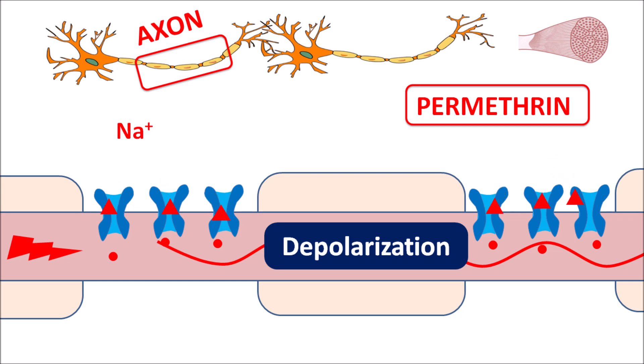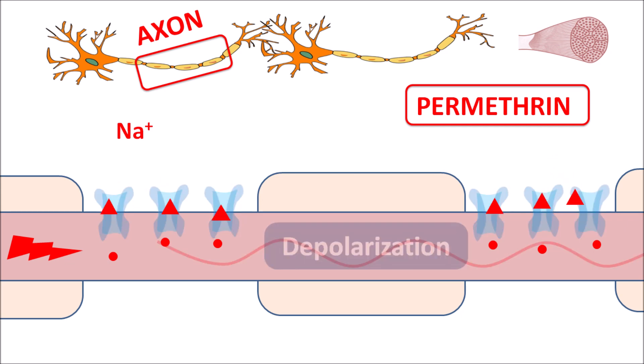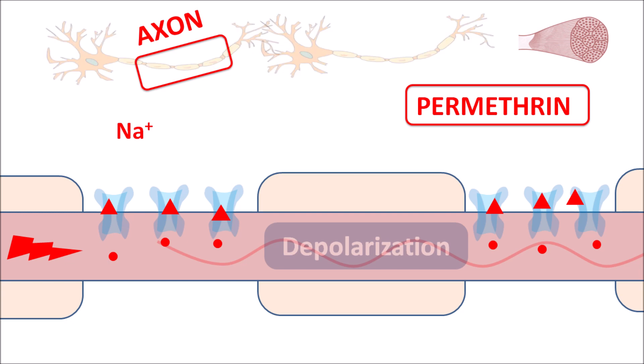Sodium enters through sodium channels, which produces rapid depolarization within the axon. Permethrin is a drug that can block these voltage-gated sodium channels such that it inhibits axonal conduction. When axonal conduction is inhibited, it inhibits neurotransmission, leading to inhibition of muscle contraction. Within the mites, the skeletal muscle is paralyzed so that they cannot grip either the hair or skin of the host. After application of permethrin, these mites can be easily washed from the skin as well as hair.